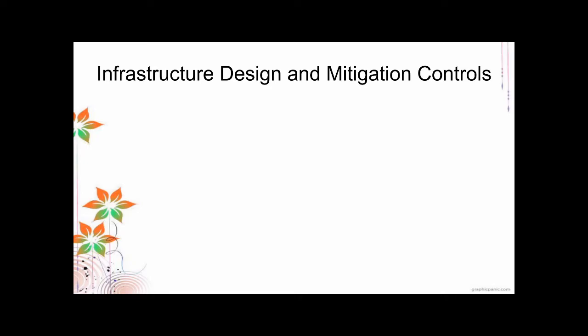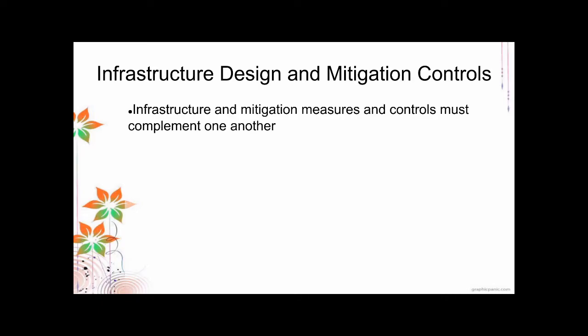The design must be properly tailored to your needs and to the objectives of your facility. Infrastructure and mitigation measures and controls must complement each other. Your engineering controls, the infrastructure, and your procedures — your SOPs — should be complementary to each other. They should make up for the lack of the other.